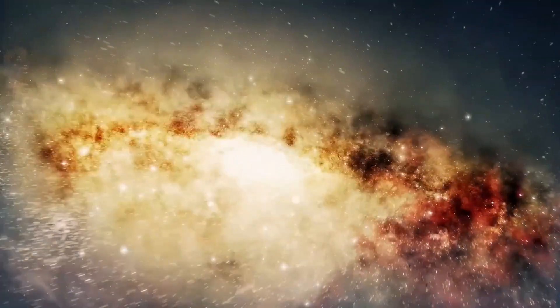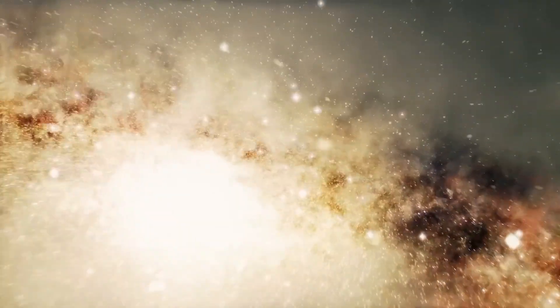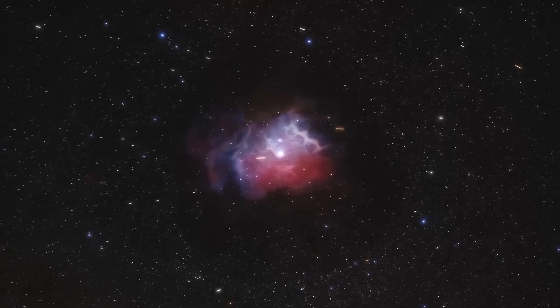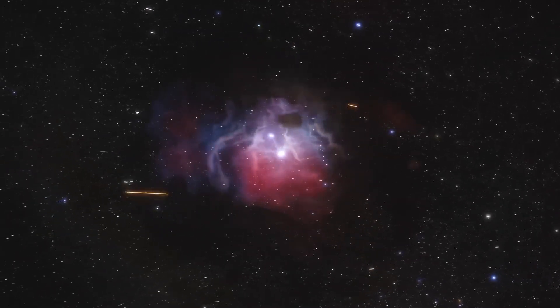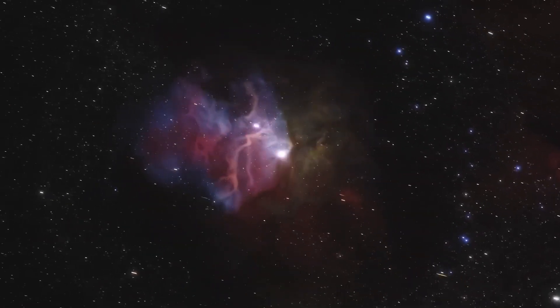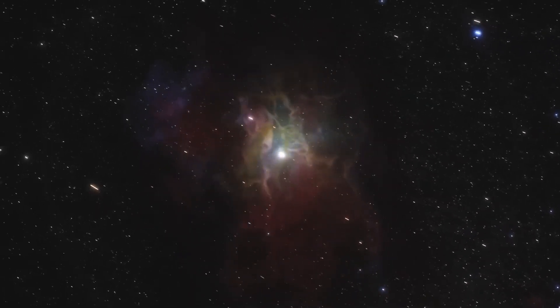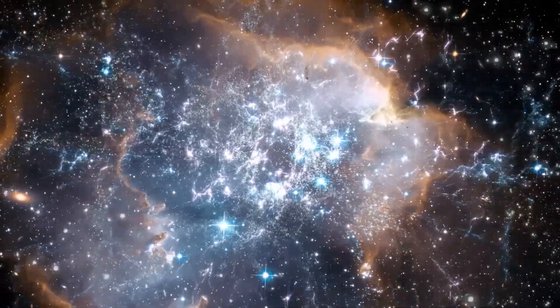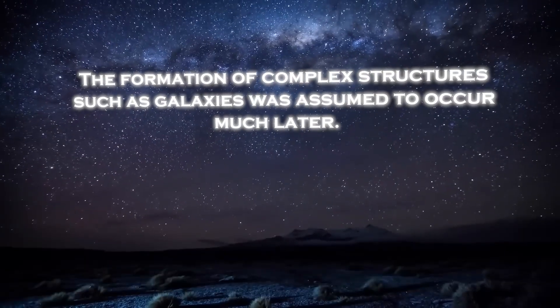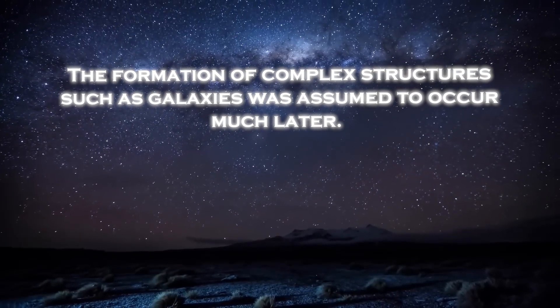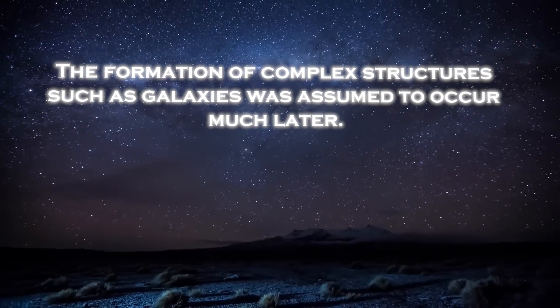The Big Bang theory tells us that the cosmos was a hot mess after the initial event. The first solid objects took hundreds of thousands of years to form and it took hundreds of millions of additional years for the objects to reach sufficient density and produce light. The formation of complex structures, such as galaxies, was assumed to occur much later.